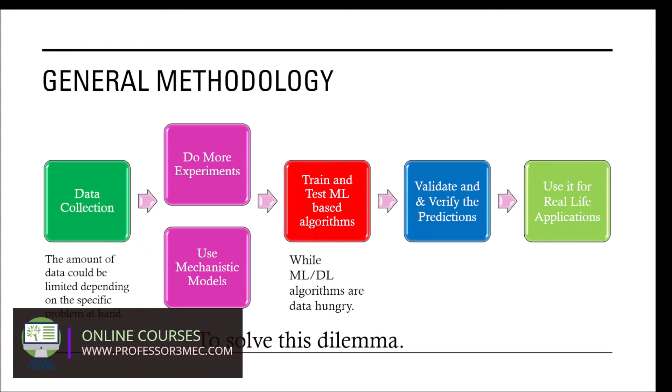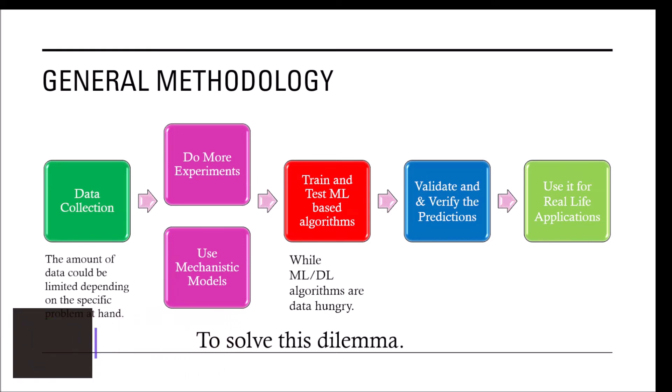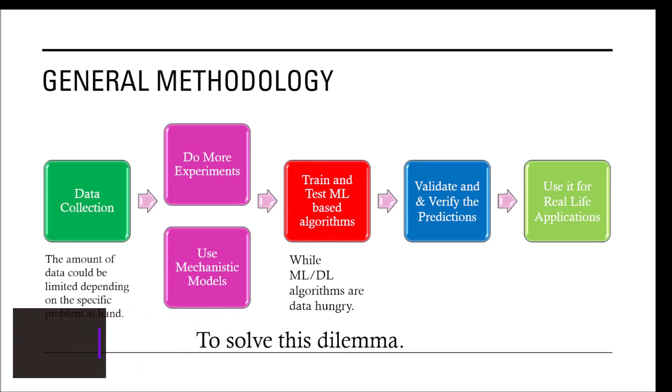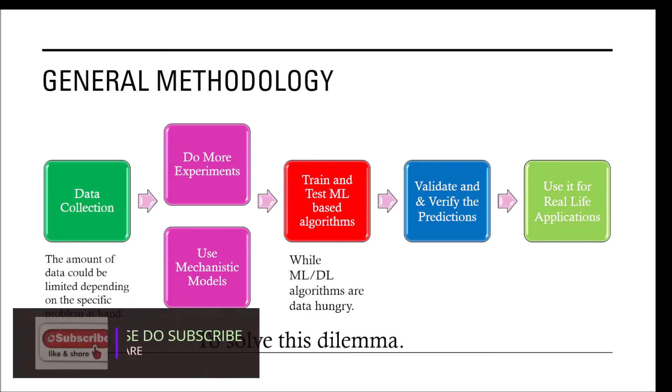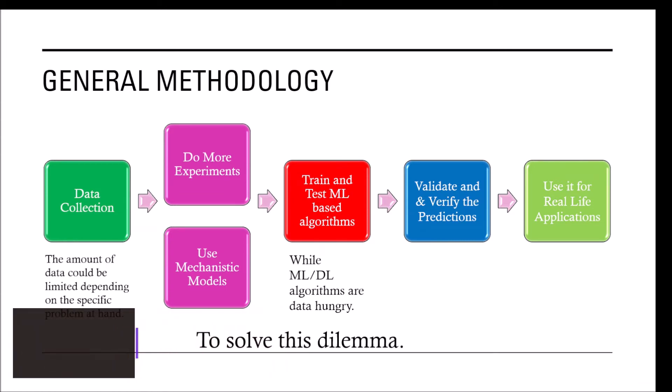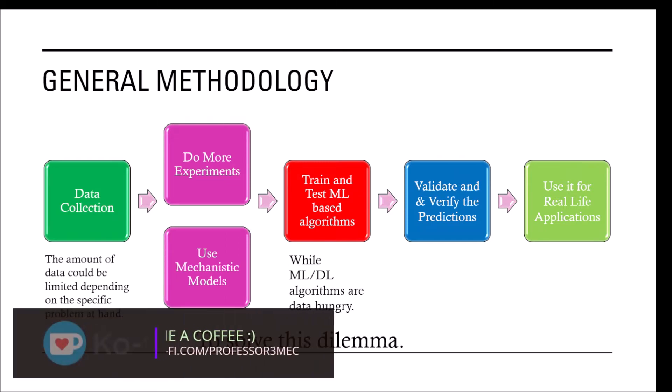The other option is to use mechanistic models which are again calibrated through experimental data, but they can give you a more mechanistic overview of the problem and you can generate more data using these techniques. So in this work we also use the experimental data to develop a mechanistic model, and then we use that mechanistic model to generate the data which was then used to train and test the machine learning algorithm.